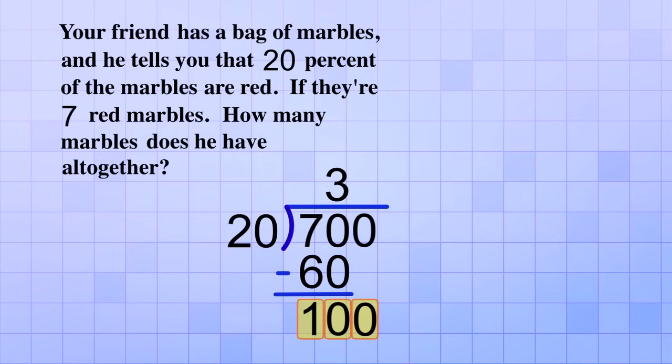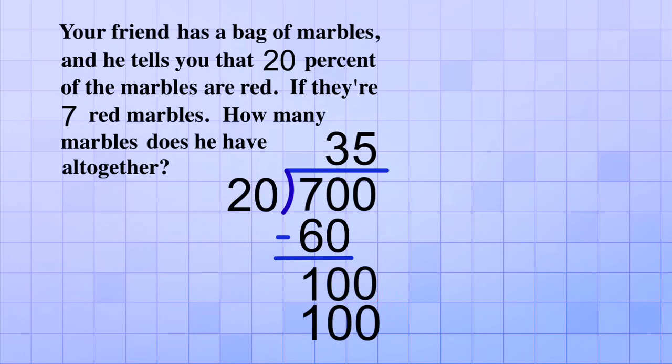and then we ask how many 20s we'll divide into 100. Aha! 5! Because 5 times 20 is 100, so that leaves no remainder.